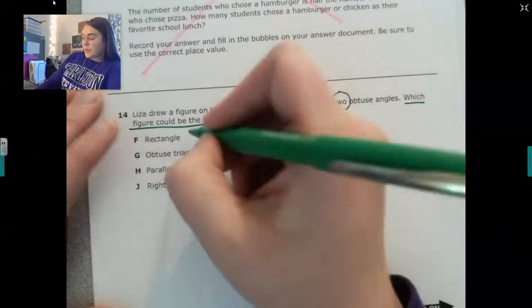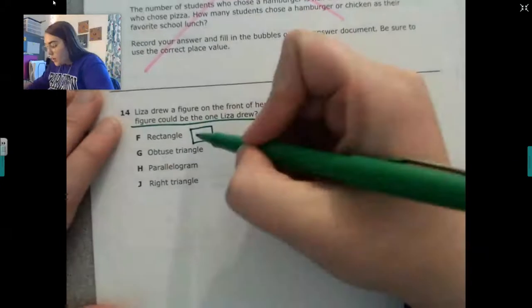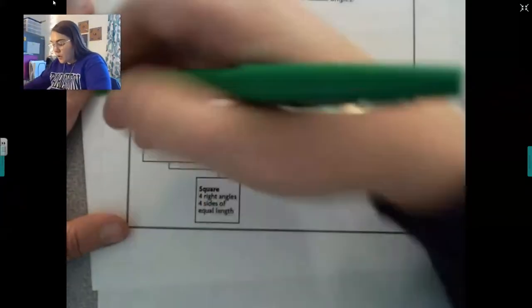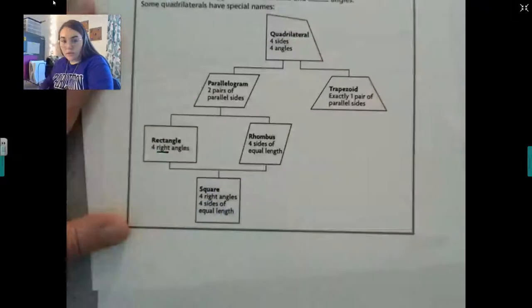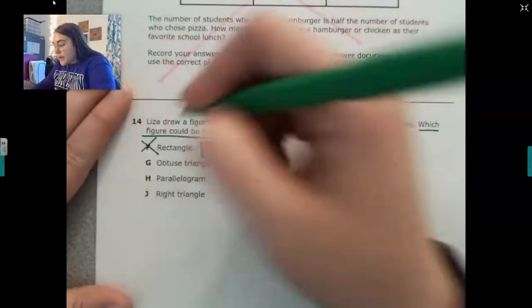A rectangle. Now, if I draw a rectangle, a rectangle has four right angles. It even says it in our flow chart. Four right angles. So guess what? It can't have two obtuse angles because it has four right.